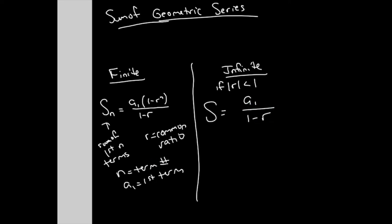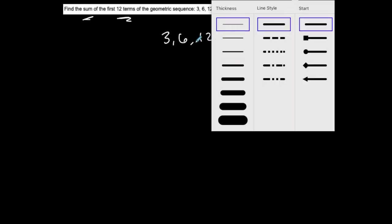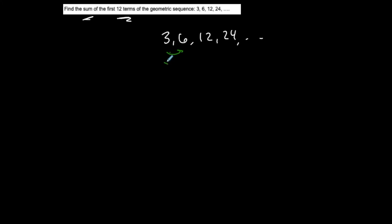So let's see the difference here. Now this example, find the sum of the first 12 terms of the geometric sequence. Let's assume they didn't tell you it was geometric: 3, 6, 12, 24. How do you know that it is geometric? Well, what are you doing to each term? I'm multiplying each term by 2 to get to the next one, which means that it's geometric. The common ratio is 2. The first term, a1, is 3.